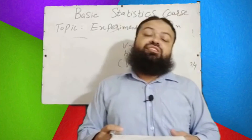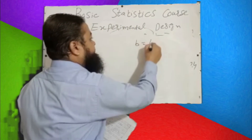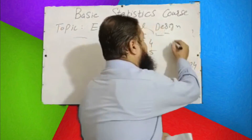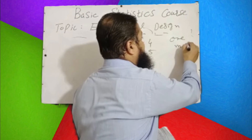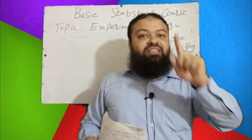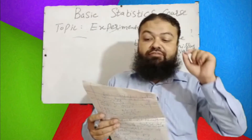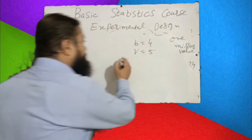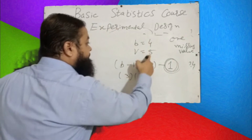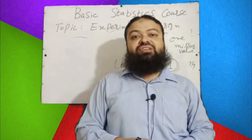Question number twelve, the last question: In a Randomized Block Design with four blocks and five treatments having one missing value — the missing value in CRD is eliminated, but in RCBD it is calculated and estimated. The error degree of freedom will be (b − 1)(v − 1) − 1 = (4 − 1)(5 − 1) − 1 = 3 × 4 − 1 = 12 − 1 = 11. The correct option is 11. A very important question. Assalamu alaikum.